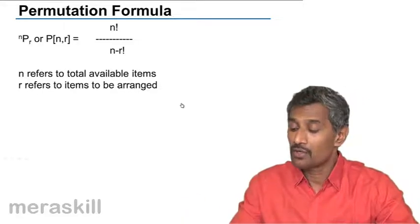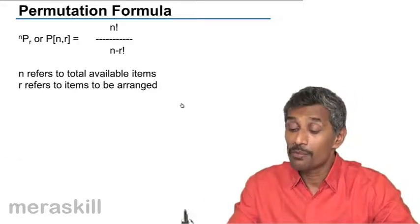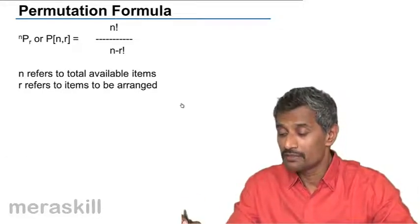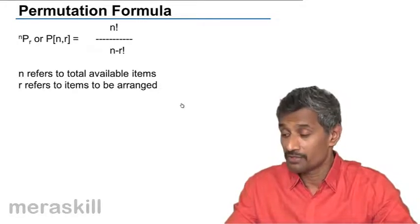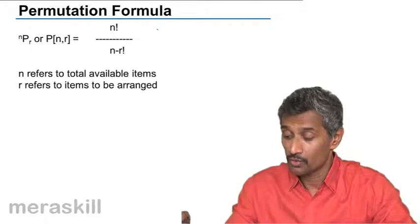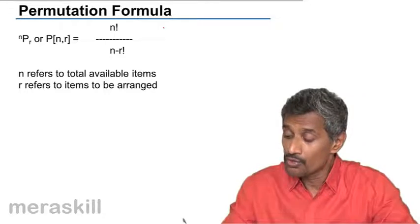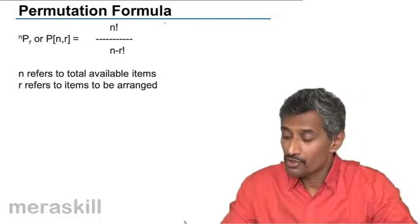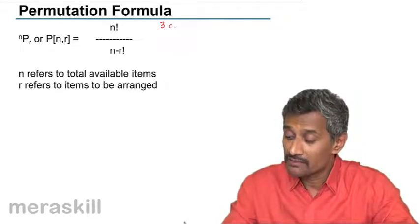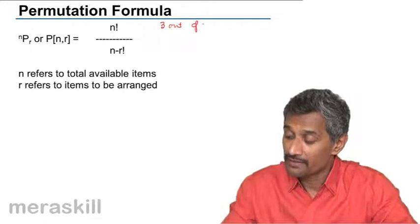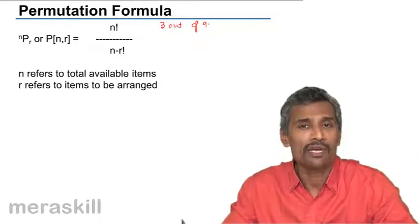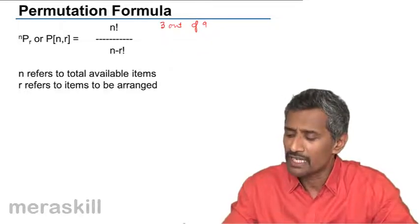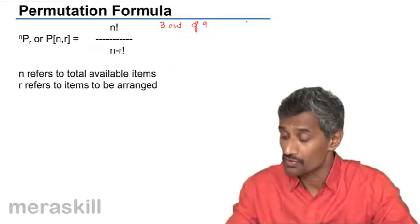Now, we have the concept of the permutation formula. It's a very interesting way of deriving the permutation formula. Now, how we get it? Suppose, let's take an example. You're selecting three items out of nine terms, or you're selecting three books out of nine. You need to select any three out of nine given books.